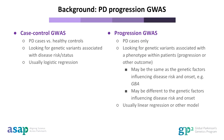These variants may be the same as the genetic factors influencing disease risk and onset. For example, we know that GBA variants are associated with increased risk for Parkinson's and also earlier onset and more rapid progression. However, the genetic factors for progression may also be different to the genetic factors influencing disease risk and onset. Usually for these types of GWASs, we use linear regression or other statistical models for longitudinal outcomes. We do these GWASs to understand more about the genetics and biology of progression within Parkinson's patients.